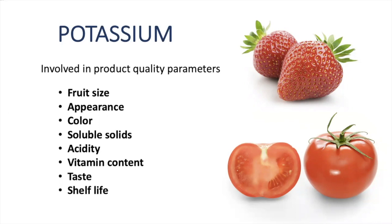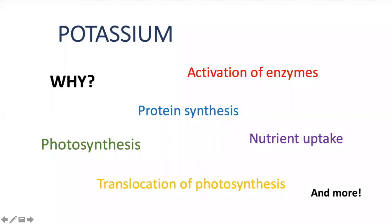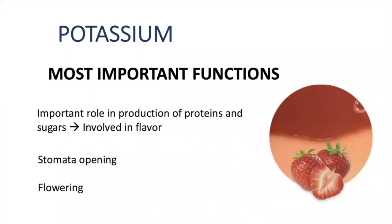Why can potassium affect so many aspects of plant production? First, enzymes can accelerate many plant processes. Stomata opening and closure are very related to photosynthesis — energy produced in photosynthesis is the fuel to keep growth and plant development. Also, stomata behavior affects the uptake of water and nutrients.